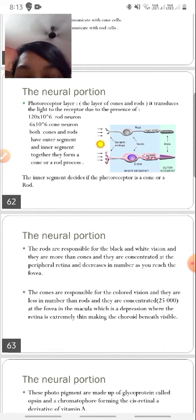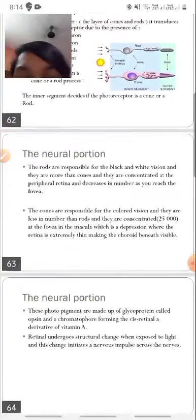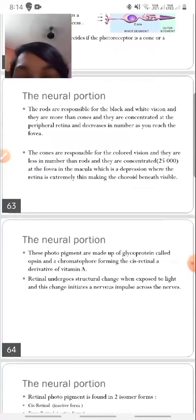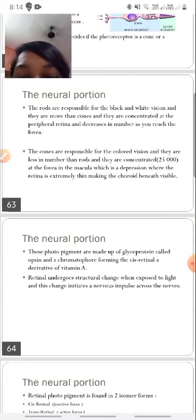While the cones are responsible for scotopic vision, meaning vision in bright light, so they are more concentrated at the fovea. The photopigment that is present in both rods and cones is made up of a glycoprotein called opsin and the chromatophore forming is retinal, which is a derivative of vitamin A. So that is why vitamin A deficiency causes night blindness, because rods are responsible for vision in night.